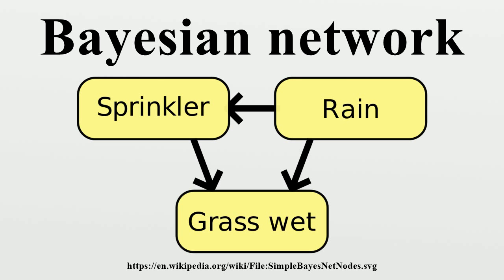The term hierarchical model is sometimes considered a particular type of Bayesian network, but has no formal definition. Sometimes the term is reserved for models with three or more levels of random variables; other times it is reserved for models with latent variables. In general, however, any moderately complex Bayesian network is usually termed hierarchical.